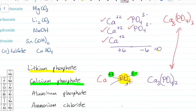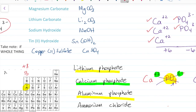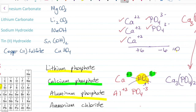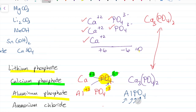Let's try aluminum phosphate — try it on your own first. Aluminum is in group 13, so aluminum is plus three. Phosphate is PO4³⁻. The charges balance — plus three minus three! This one is easy. The formula is just AlPO4 — notice uppercase, lowercase, uppercase, uppercase. No parentheses, no charges in your final answer. It looks like dog food: Alpo!